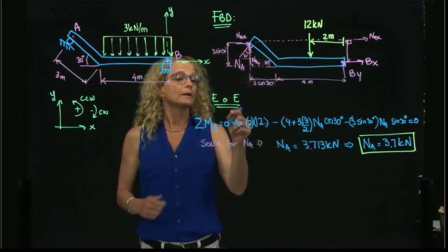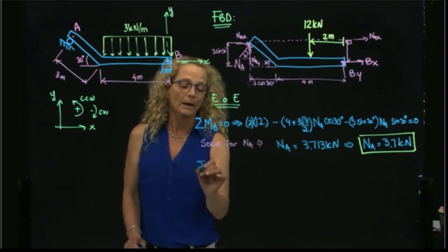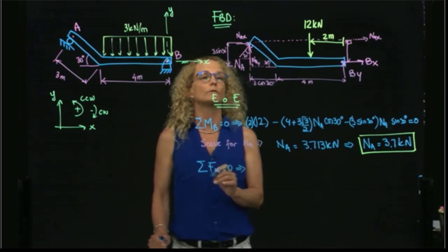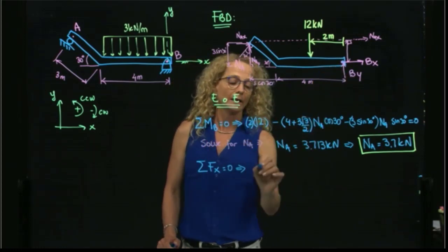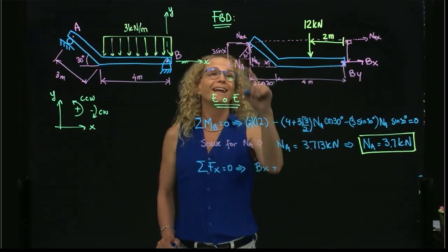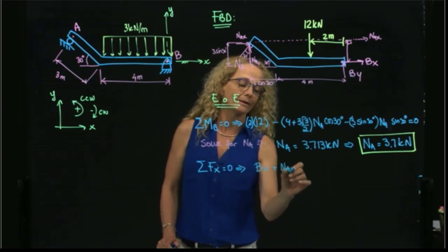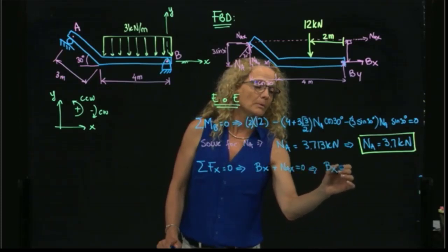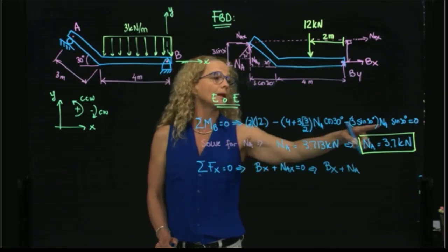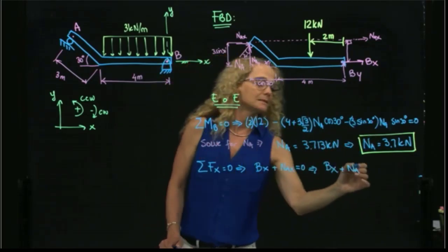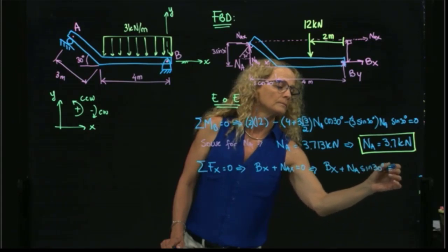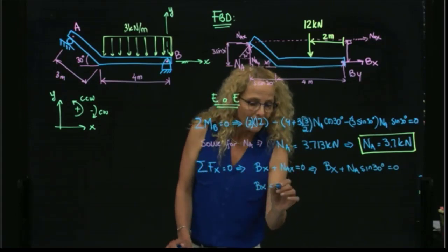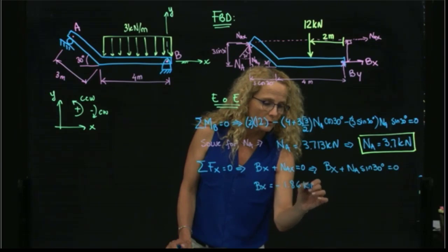So now that we got our NA, we can apply our other equations of equilibrium, which is forces in X. Here I have BX plus NAX. I don't have any other forces in X. This is equal to zero. That is BX plus NA times sine of 30. Therefore, BX equals negative 1.86 kilonewtons.